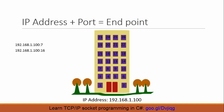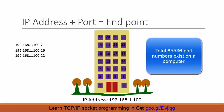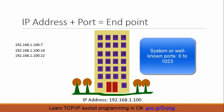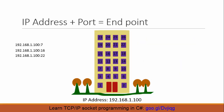The combination of IP address and port number is called an endpoint, and an example of an endpoint is shown on the left side here. There are a total of 65,536 ports in a computer, and port numbers from 0 to 1023 are reserved for system usage. These are also called well-known ports or system ports.